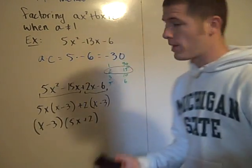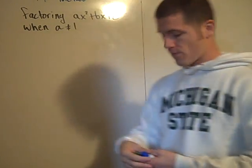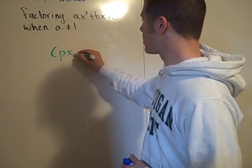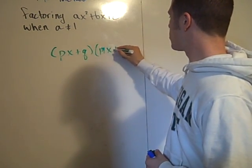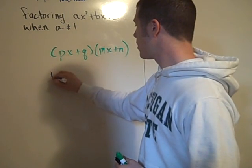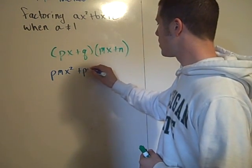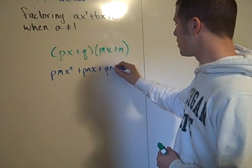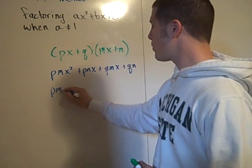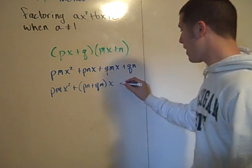So let me show you the actual mathematics behind it. If you start with a factored form of an expression of this nature, you know, something like (px + q) times (mx + n). And if I were to actually multiply this out, so I'm sort of going in reverse here. If I'm going to multiply this out, what I have is pmx² + pnx + qmx + qn. Now written as a trinomial, this is pmx² + (pn + qm)x + qn.